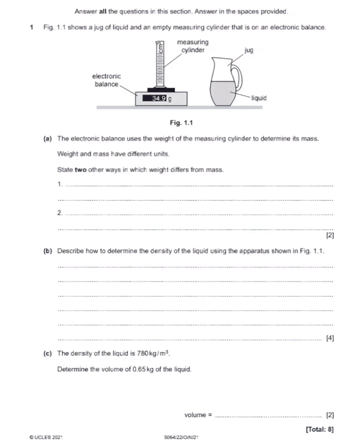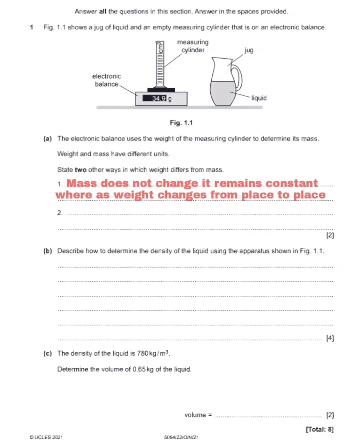So for the first difference, I'm going to say: mass does not change — it remains constant — whereas weight changes from place to place.